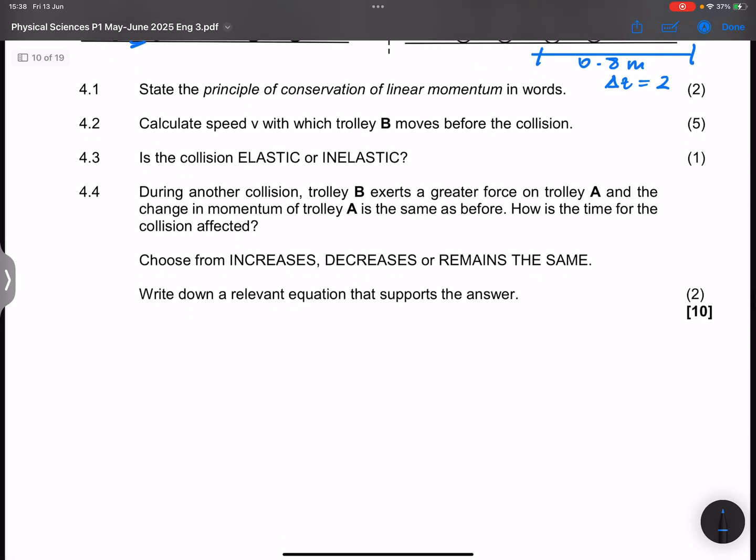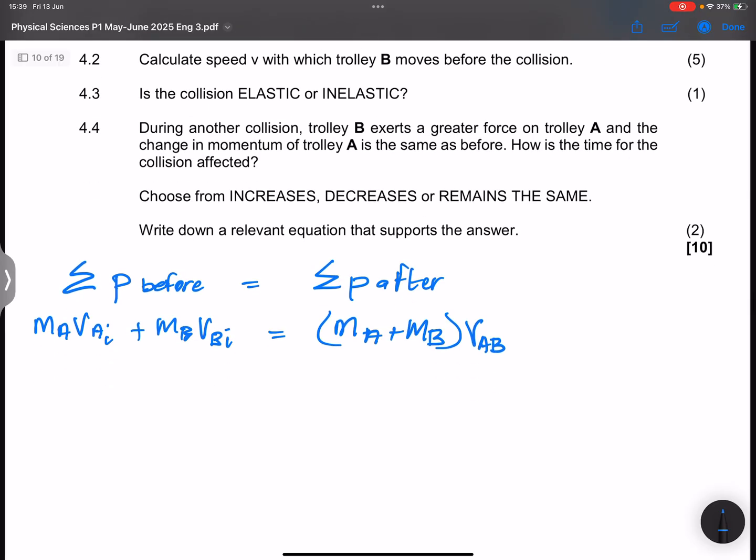Now, we can apply the principles of conservation of linear momentum. The sum of momentum before collision will be equal to the sum of their momenta after collision. This is the mass of A times velocity of A before, plus the mass of B times velocity of B before. This would be equal to the mass of A plus the mass of B, times their common velocity after collision, velocity of AB.